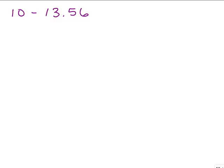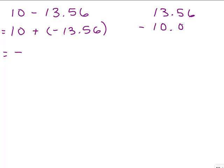All right, here's another one to try. 10 minus 13 and 56 hundredths. Again, with subtraction, we want to rewrite that as 10 plus a negative 13.56. And now we're adding a positive and a negative and we have more negatives. We take their difference because they're different signs. 13.56 minus 10 and we get negative 3.56. So hopefully you're getting the hang of this.